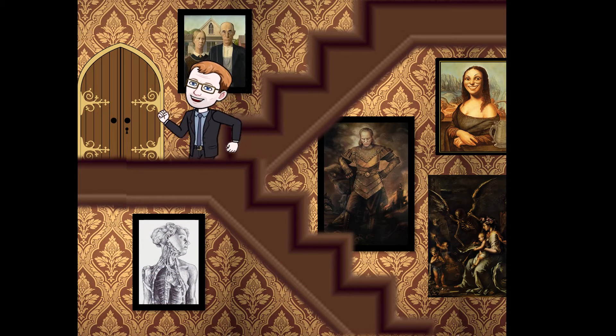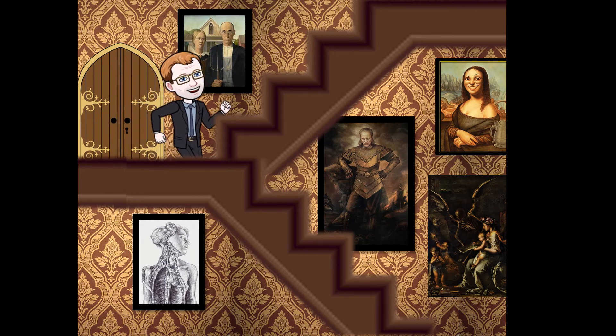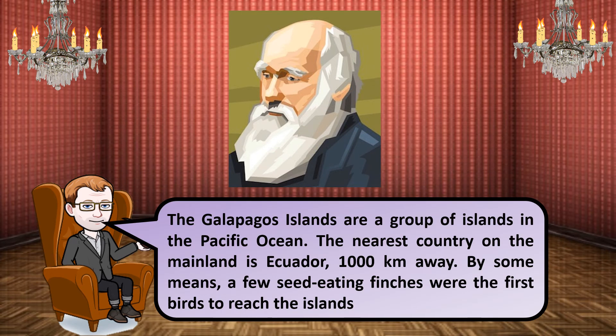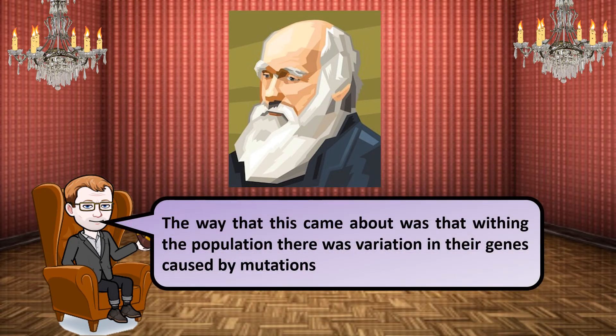Let's look at a specific example. The Galapagos Islands are a group of islands in the Pacific Ocean; the nearest country is mainland Ecuador, which is about 1,000 kilometres away. By some means, a few seed-eating finches were the first birds to reach the islands. Within the population there was variation in their genes, caused by mutations.